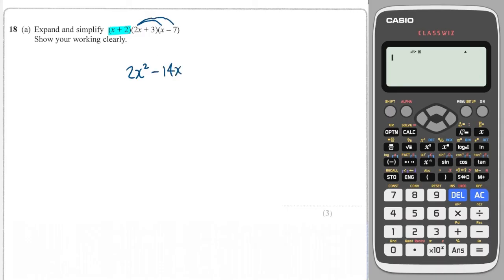Minus 14x plus 3x, and then minus 21. Again, take the two center terms and collect them, which is going to give me minus 11x.